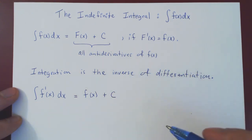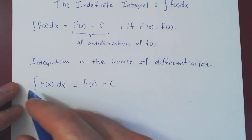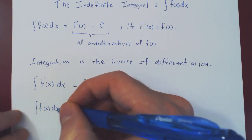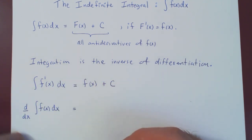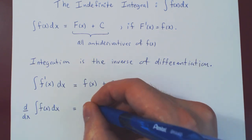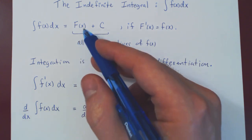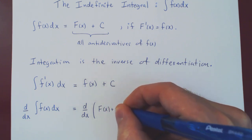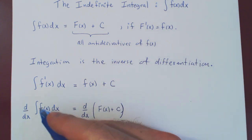What if we do the opposite? What if we start with f, and then do the same thing but in the opposite order? We will integrate f, and then we will take its derivative with respect to x. Let's see what comes out of this. If we are correct, we should get back the function. Well, let's see. The derivative of — we can replace the integral of f of x dx by its antiderivative form — so uppercase F of x plus C, where uppercase F is an antiderivative of lowercase f.